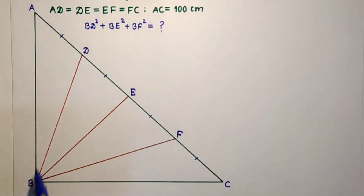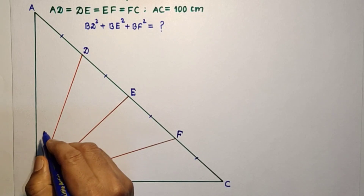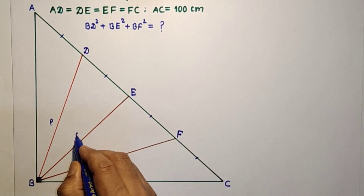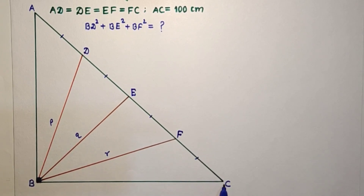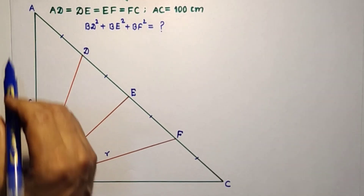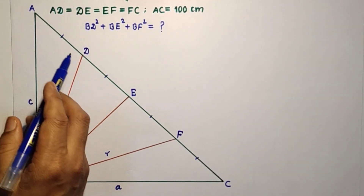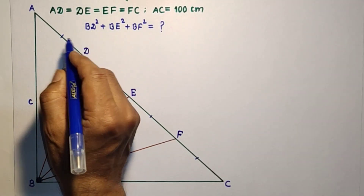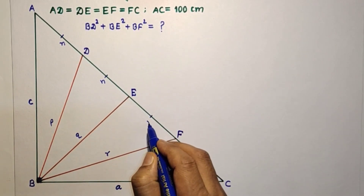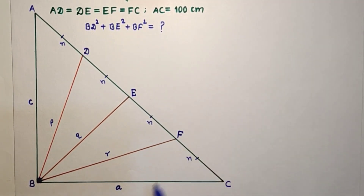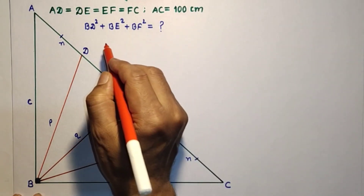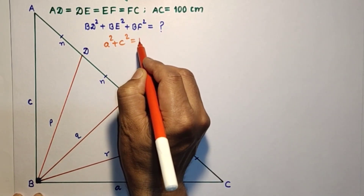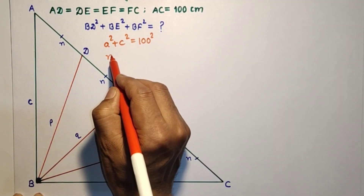In this question we have to find the sum BD² + BE² + BF². For simplicity, let BD = P, BE = Q, BF = R. The side BC = a, and AB = c. Each of AD, DE, EF, FC equals N = 25 cm. By the Pythagorean theorem, a² + c² = AC² = 100² = 10000.